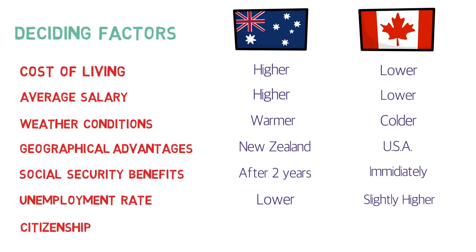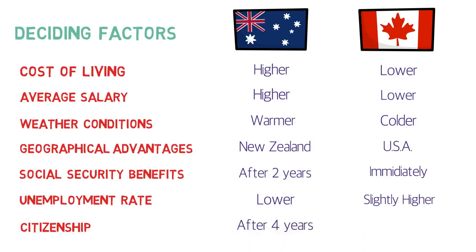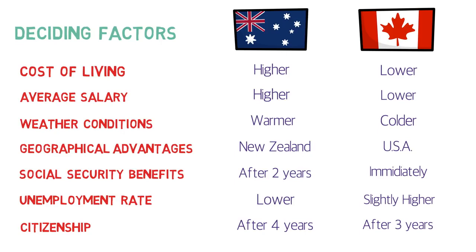For citizenship, as a permanent resident of Australia you need to spend around 4 years before you can apply, while in Canada you only need to stay for 3 years as a permanent resident before applying for citizenship. This applies to time spent as a permanent resident, not as a temporary worker, on a work permit, or on a study visa.